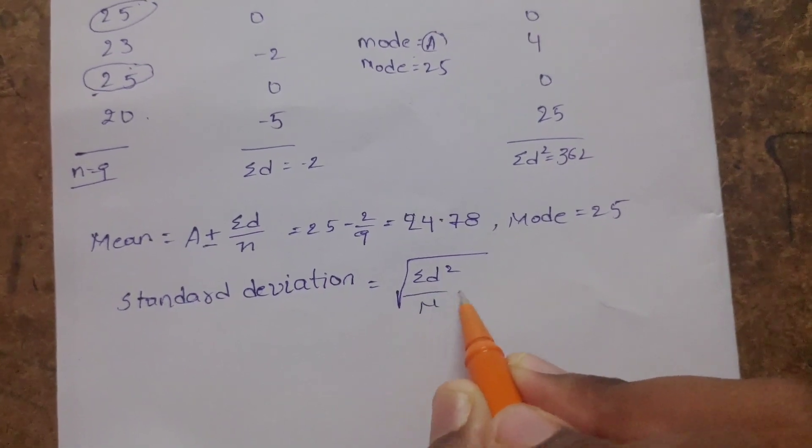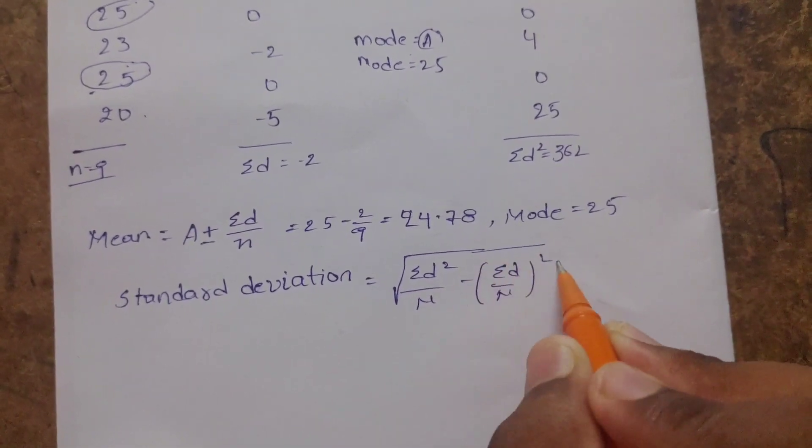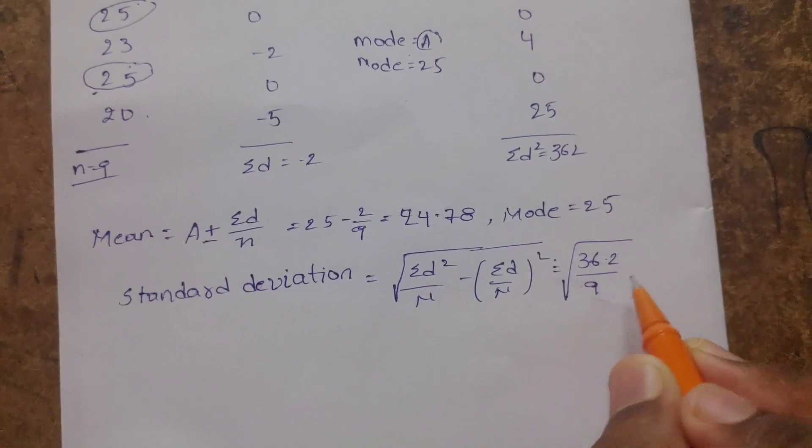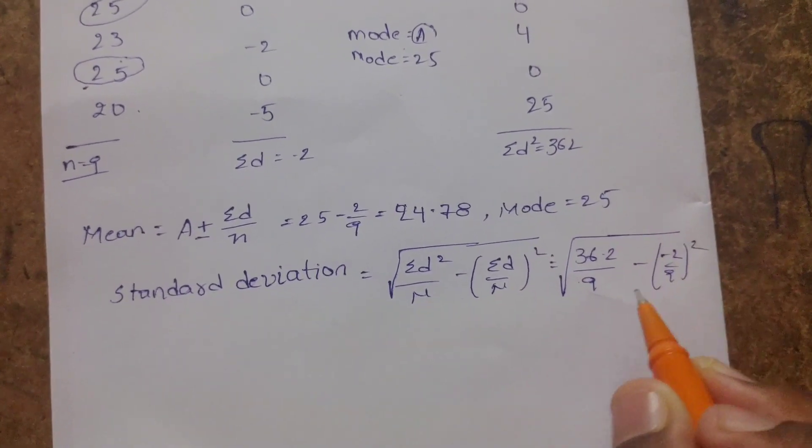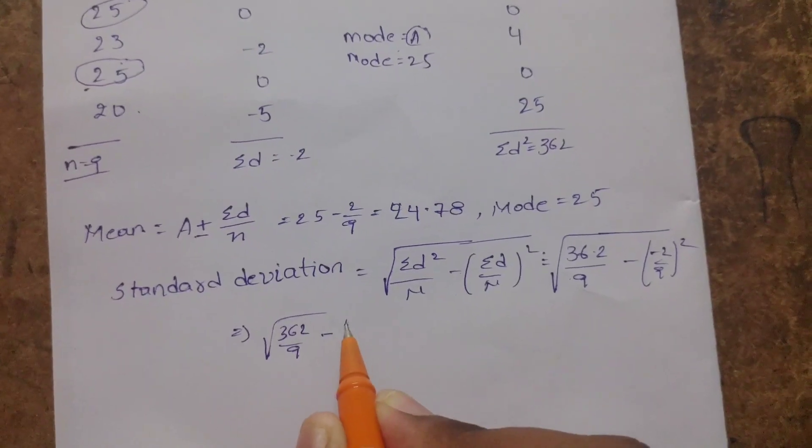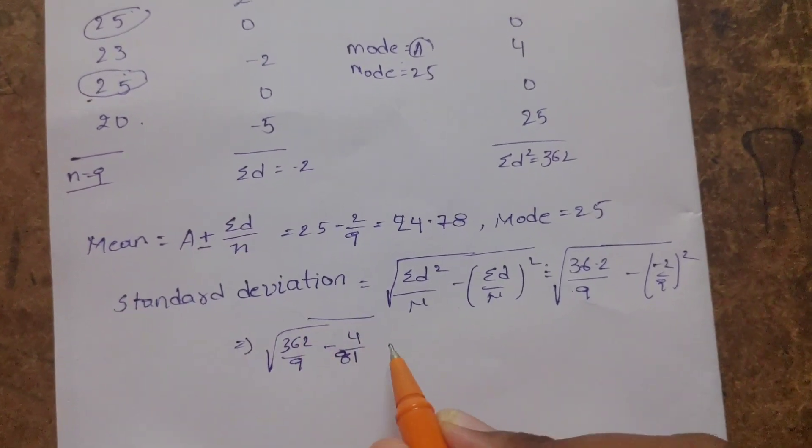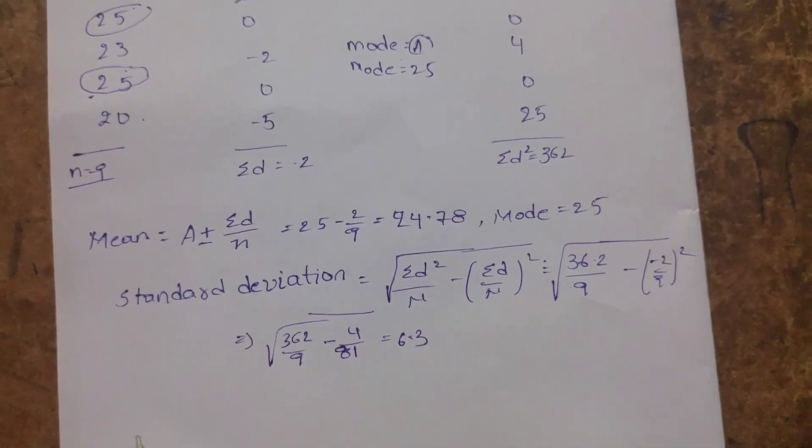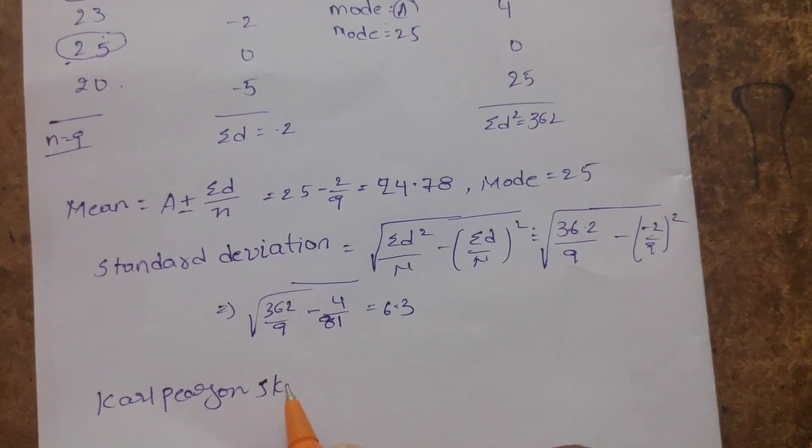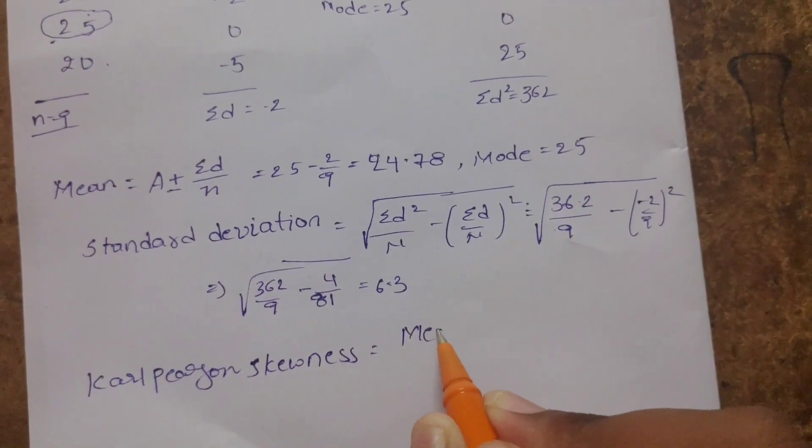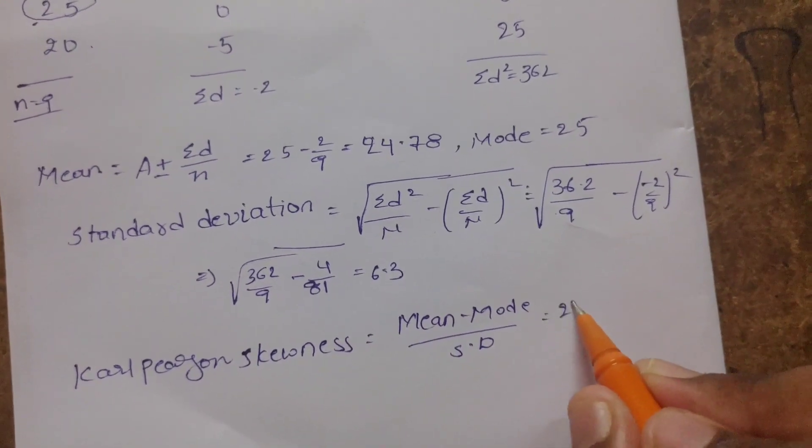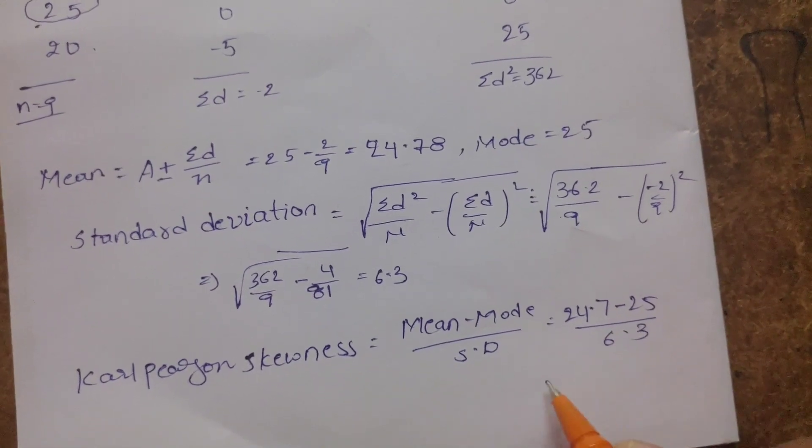Standard deviation equals square root of sigma d squared by n minus sigma d by n whole squared. That equals 362 by 9 minus minus 2 by 9 whole squared. Further simplification gives root of 362 by 9 minus 4 by 81, which equals 6.3. So skewness equals mean minus mode by standard deviation, which is 24.78 minus 25 by 6.3.